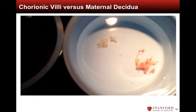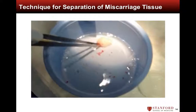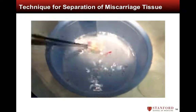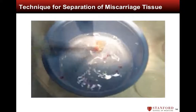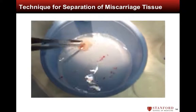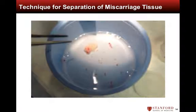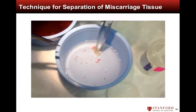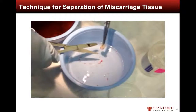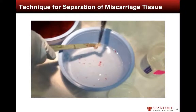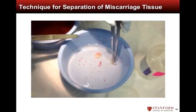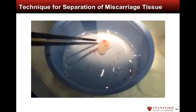Once villi have been isolated from the miscarriage specimen, the next and final step is dissection of decidual tissue off the villi. Maternal decidua, which can be visually identified as pinkish-red in color, can be separated from the chorionic villi by grasping the tissue with smooth pickups and agitating the specimen as shown in this video. If this is unsuccessful, the tissue containing both decidua and villi should be incised completely from the specimen, leaving only chorionic villi for chromosome analysis.